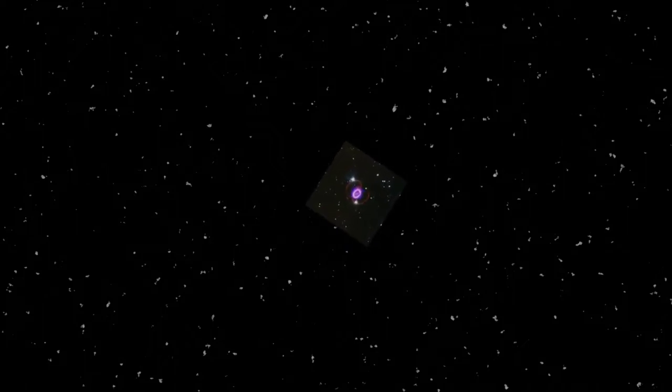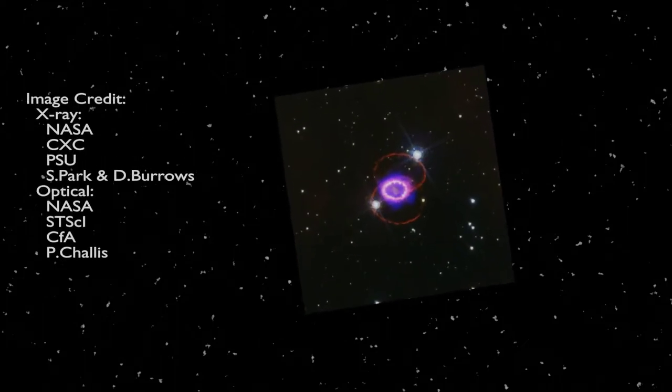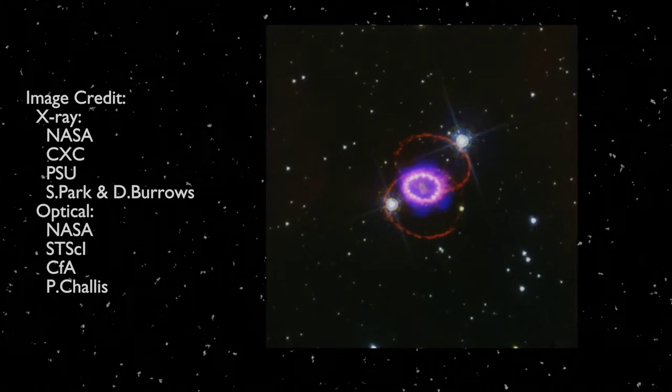Next, NuSTAR provided data, along with data from the Chandra and ALMA missions, to show evidence of a Neutron Star at the center of Supernova 1987A. Supernova 1987A is actually a source that I've studied. I studied Supernova remnants. I studied it back at my time in a university, and I still continue to study these now.